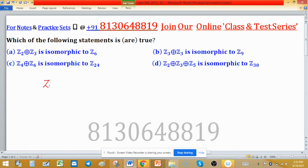We're dealing with isomorphisms of the form Zn direct sum with Zm. We have to find which option or options are correct.